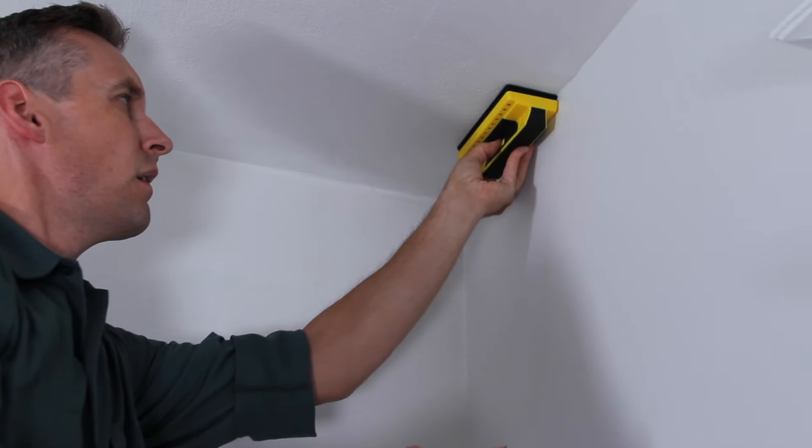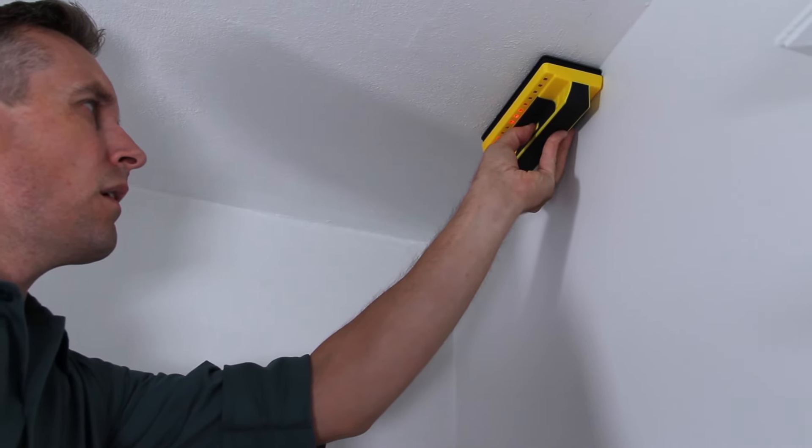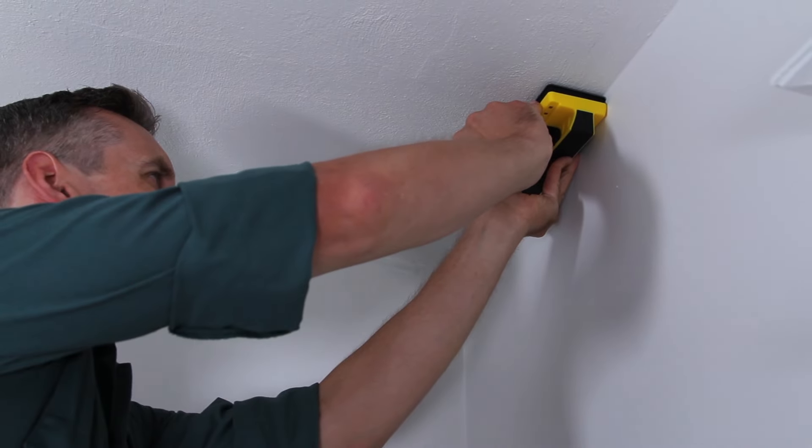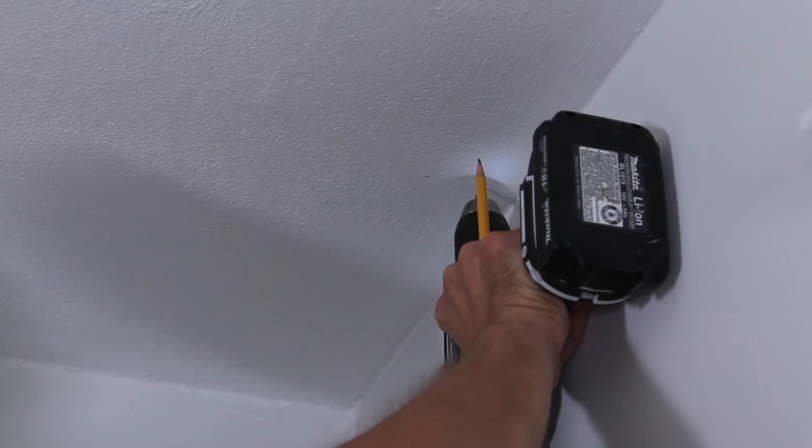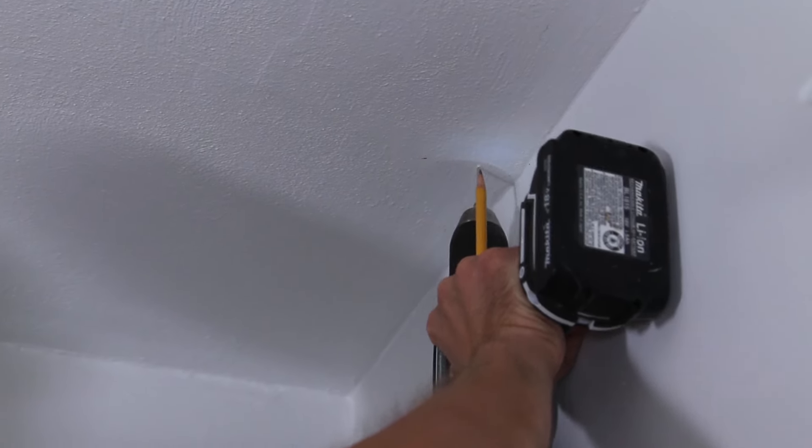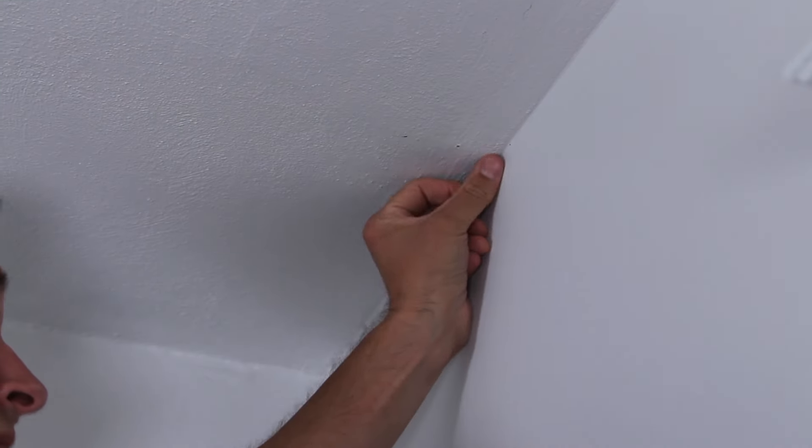Next, use a stud finder to locate the ceiling joists and mark both ends of the joists where they meet the walls. To make sure you're catching wood, use a small drill bit to drill into the ceiling. Don't worry about the holes. They'll get covered up later by the beams.